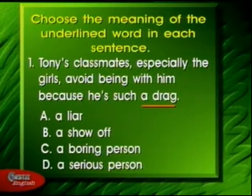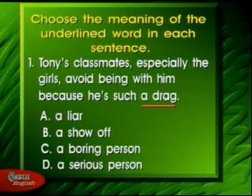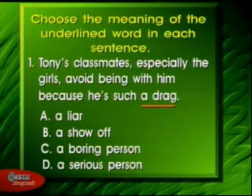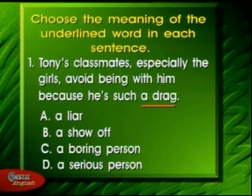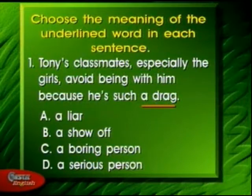Choose the meaning of the underlined word in its sentence. Example: Tony's classmates, especially the girls, avoid being with him because he's such a drag. The distractors are: A — a liar, B — a show-off, C — a boring person, D — a serious person. Notice that this item uses a multiple choice format with four distractors. Notice too that the sentence does not provide enough context clues or semantic cues to get the meaning of 'drag,' and the distractors cannot help since they are all negative traits.